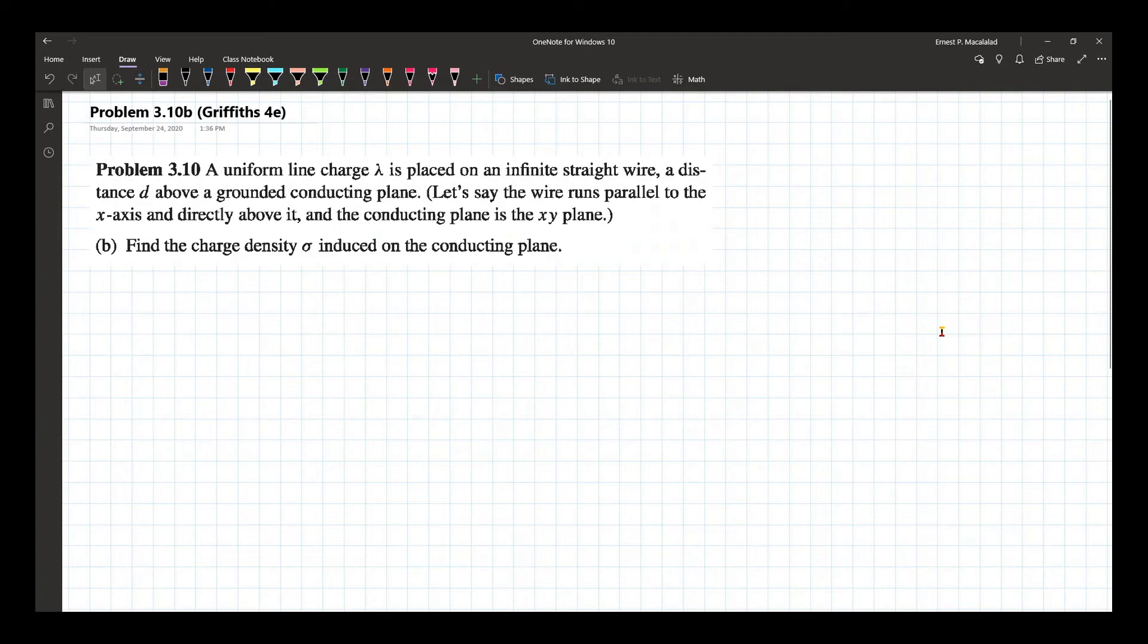Problem 3.10B of Griffith's 4th edition reads: A uniform line charge lambda is placed on an infinite straight wire, a distance d above a grounded conducting plane. Find the charge density sigma induced on the conducting plane.